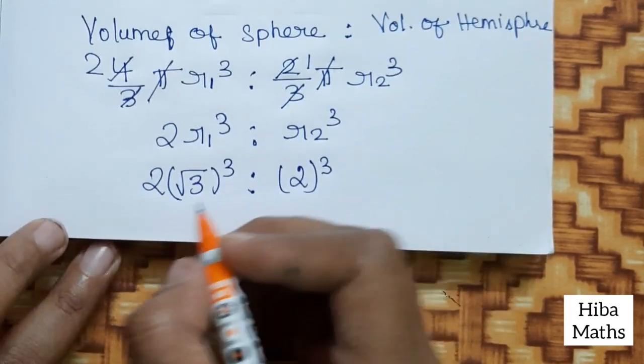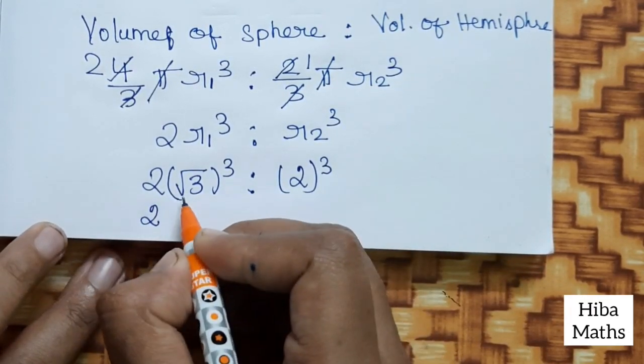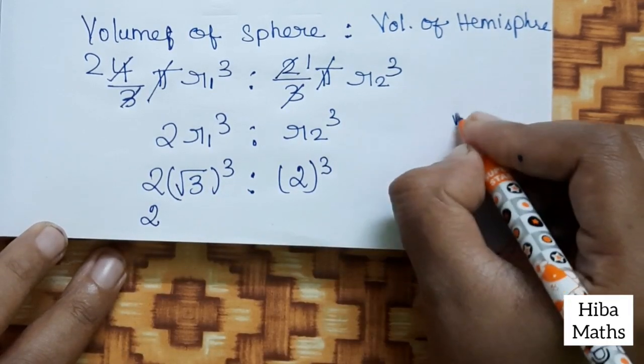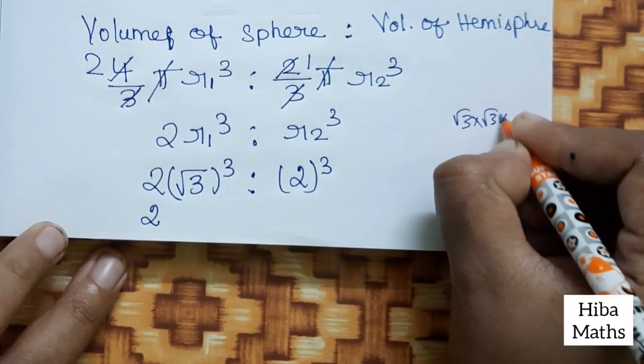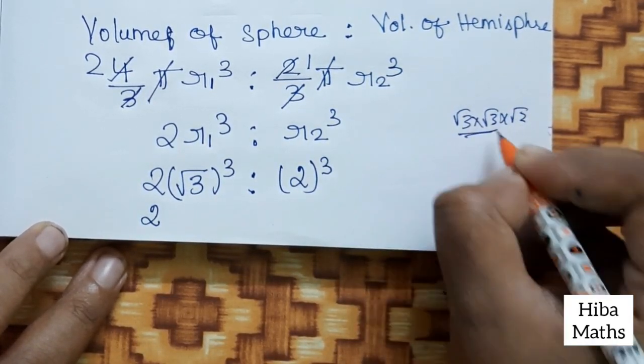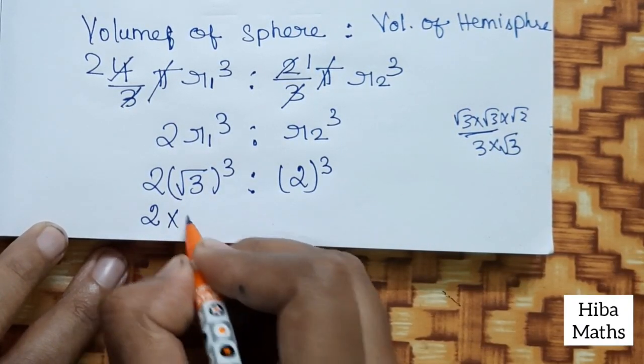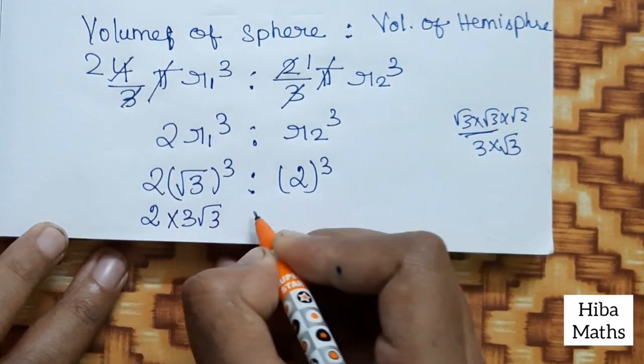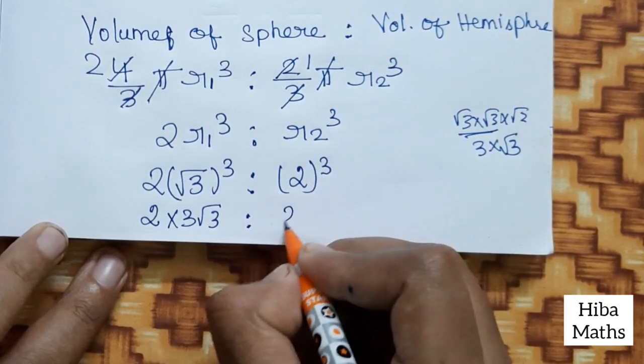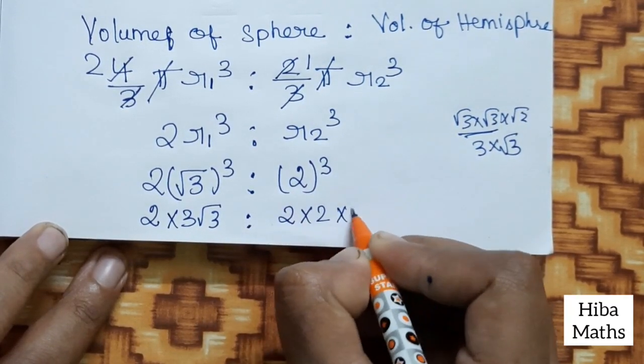So √3 whole cube: √3 into √3 into √3. Two √3 is 3, and √3 remains. That's 3√3. 2 cube is 2 into 2 into 2.